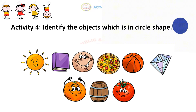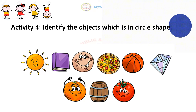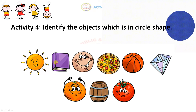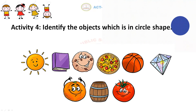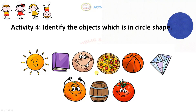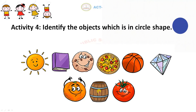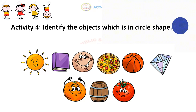Children, the remaining pictures are a book, diamond, and keg — these are not in circle shape.